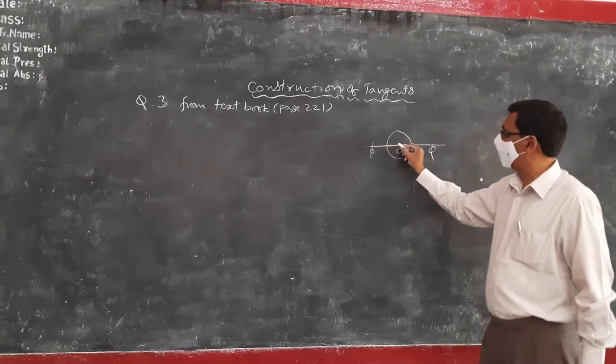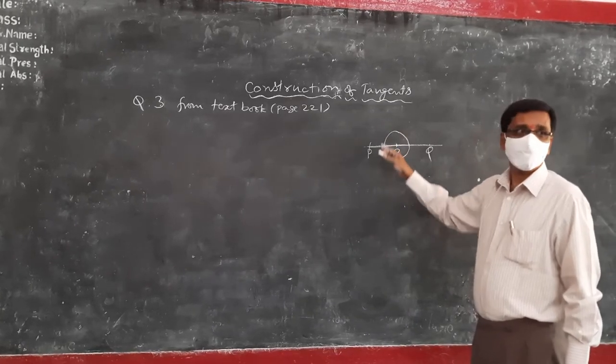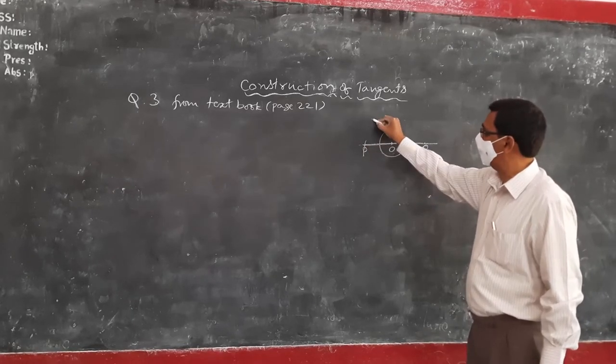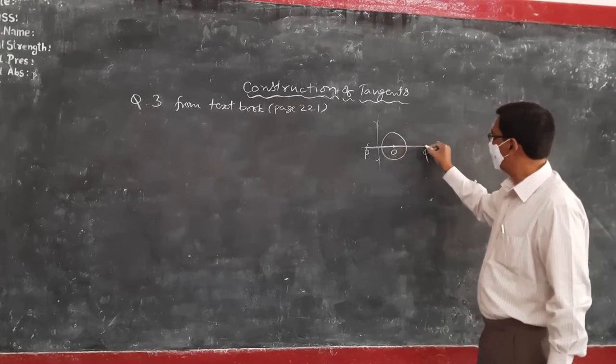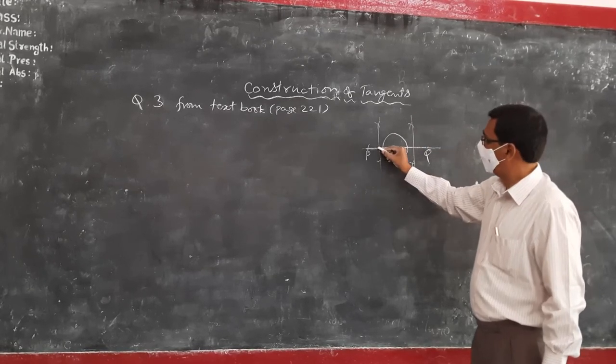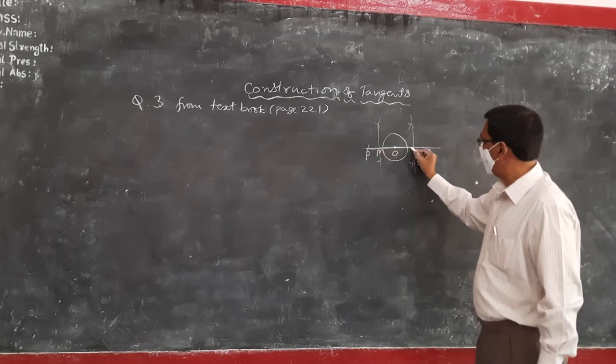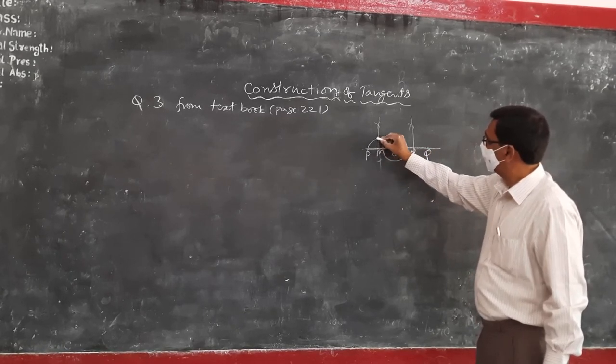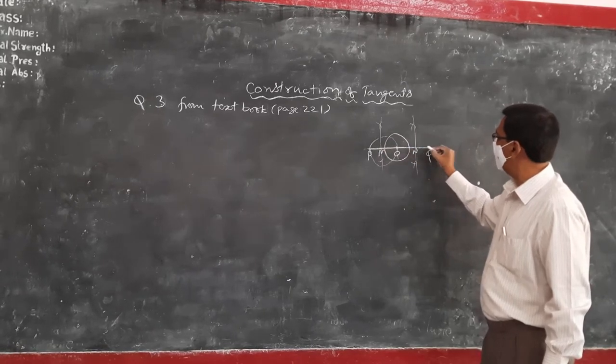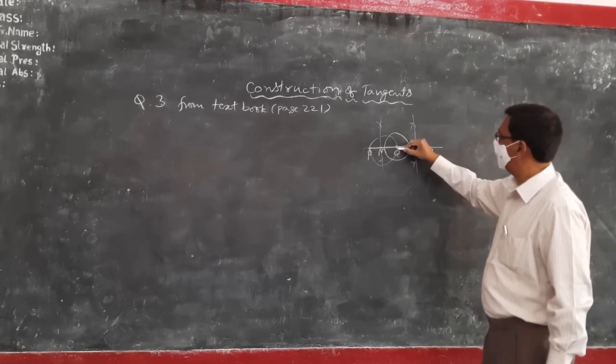Therefore, now first divide this OP, 5cm bisector will draw. With the same measurements you can do this one also, 5cm bisector will draw. Now, with M and N as centers, draw circles like this with PM as radius.